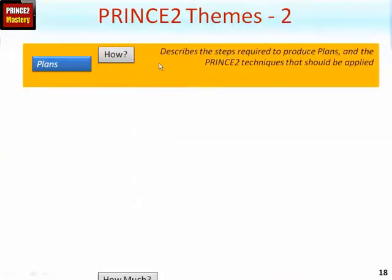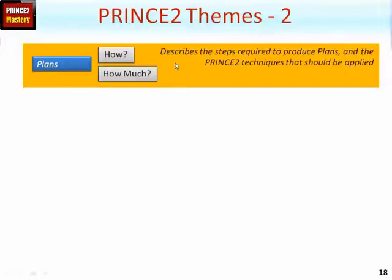The PLANS theme covers the HOW and HOW MUCH. This describes the steps needed to create a plan. In PRINCE2, all plans are a document. They will contain schematics such as Gantt charts, product breakdown structure diagrams, and so on, but they will also contain narrative which lays out how the plan is to be used and the PRINCE2 techniques that should be applied. A plan also contains HOW MUCH — how much cost, how much resource, how much time, as an example.